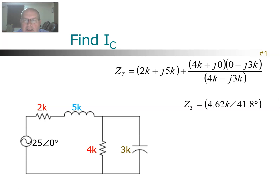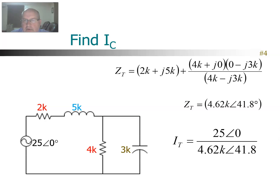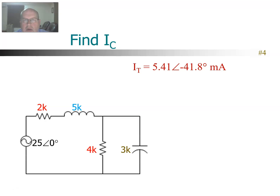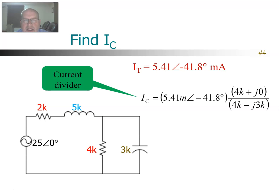When I do that arithmetic in a calculator, I get a total Z of 4.62K at angle 41.8 — the units are ohms. Now I can use Ohm's Law. Voltage divided by total Z gives me the total current, and that total current works out to be 5.41 milliamps at angle −41.8. So that's the total current, but we're looking for the current through the capacitor. So we'll use that total current and then put it together with the current divider rule. You may remember this from DC — this is the special case where we have two branches. We take the total current, multiply by the opposite branch, and divide by the sum of the two branches.